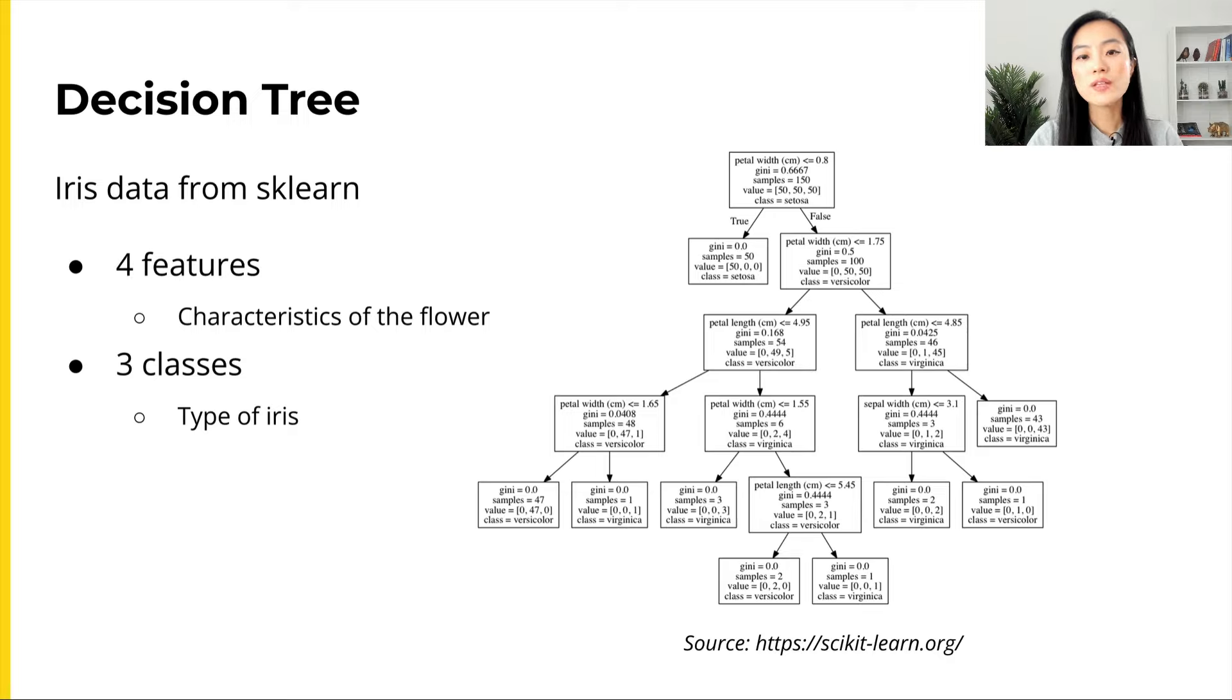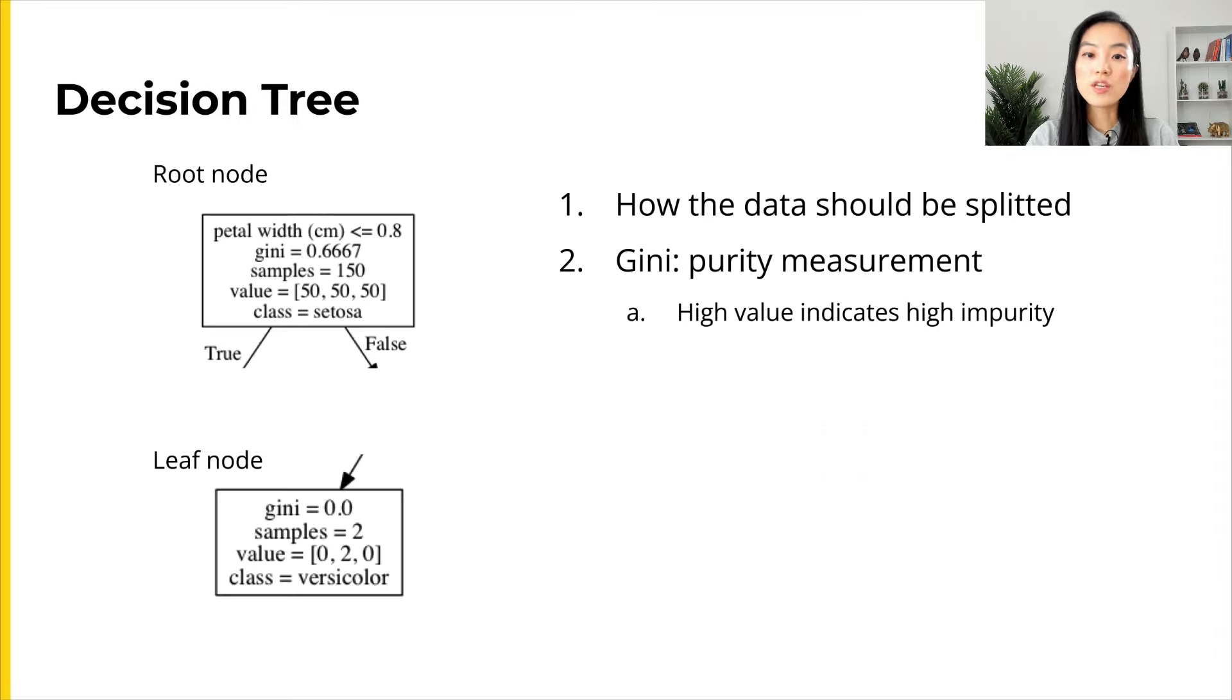We can visualize the trained decision tree in Python. It looks like a binary tree and each node contains some information. Let's take a look at the information we get from each node. There are five lines of information in each node.